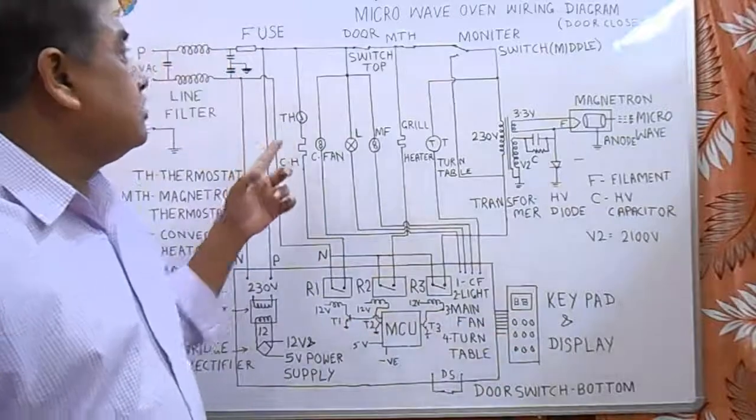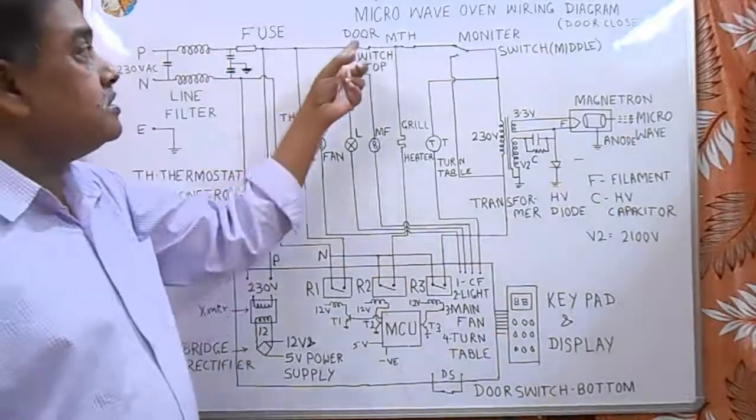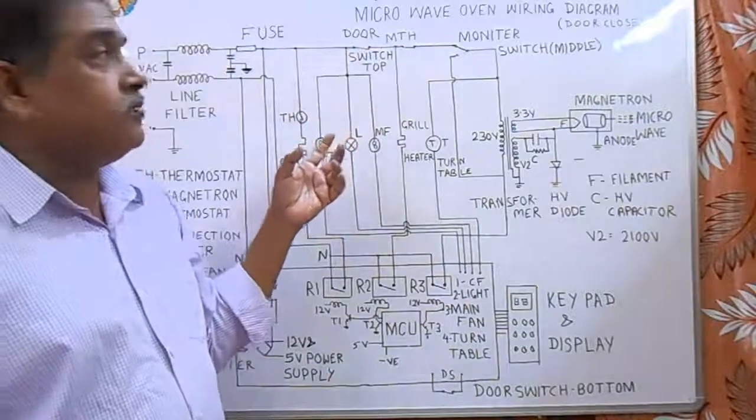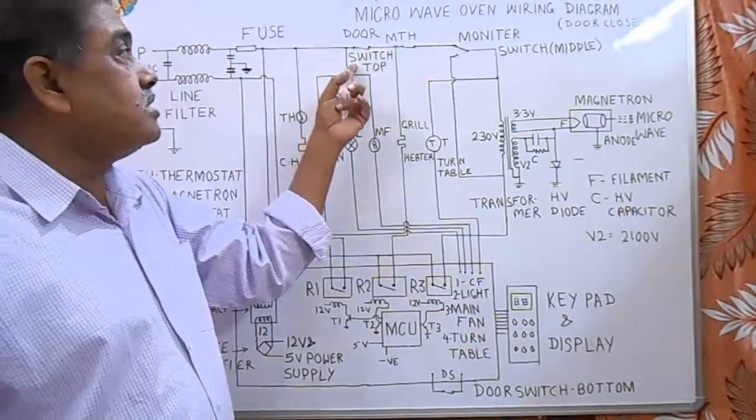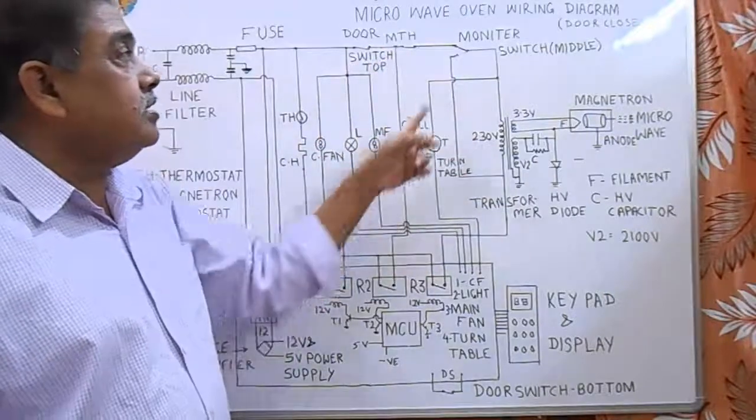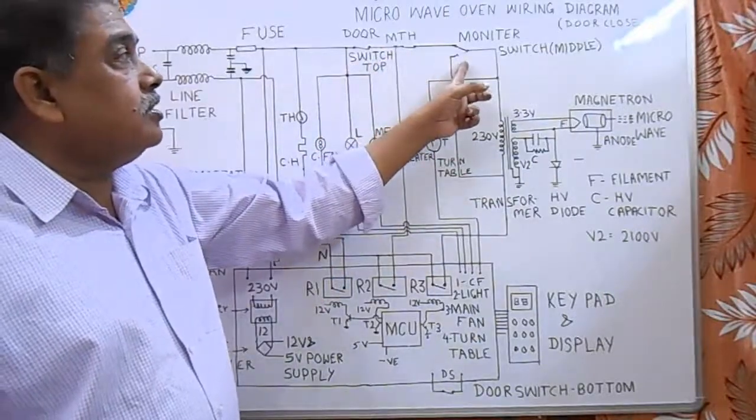It produces 4000 to 4100 volt negative supply to the cathode, and the anode is connected to earth. There are three switches for safety purposes. This is door switch one. Whenever we open the front door of the microwave,